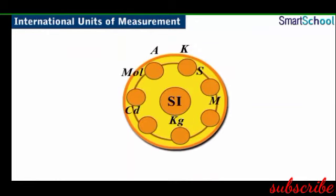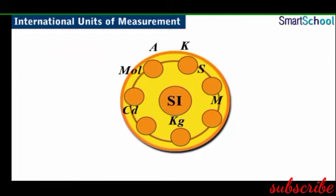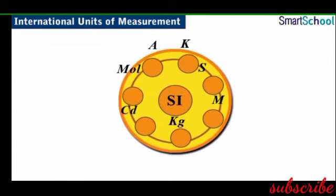In SI, there are seven base units for the seven physical quantities taken as fundamental quantities. The following are the quantities and their corresponding units.